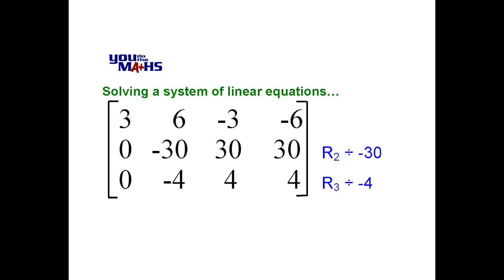Before we do this let's just make life a bit simpler for us and we're going to divide everything in row 2 by negative 30 and likewise we're dividing everything in row 3 by negative 4. And we can do that because if we do an operation to both sides of an equation it still remains true.